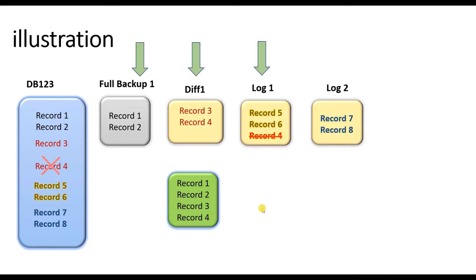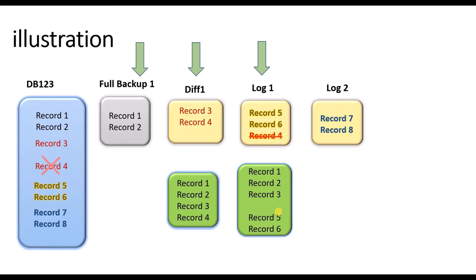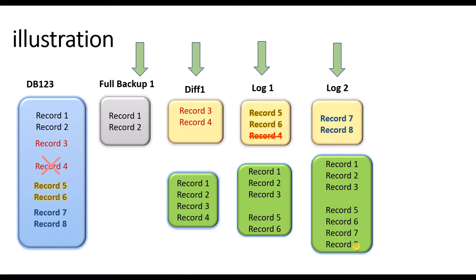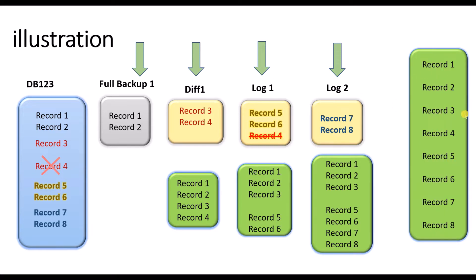Then to restore log backup one, you restore to a specific point in time — as seen in the previous video. If you don't do point-in-time restore and just restore this log backup, you will have all six records except record four, because record four gets deleted during that log backup restore. Then after restoring log two you get records seven and eight, but still no record four. The requirement is to restore all eight records including the deleted record four.